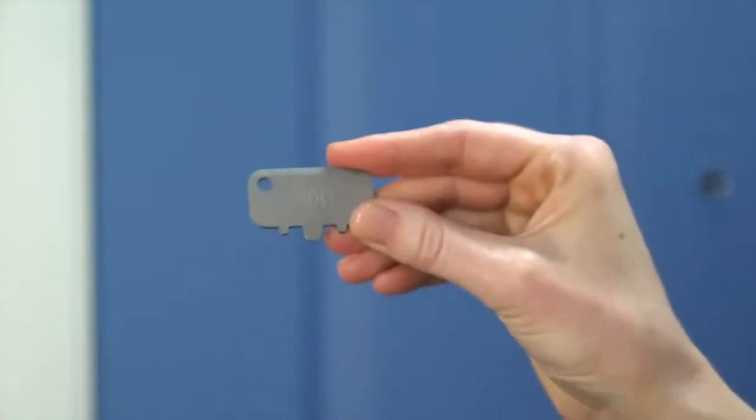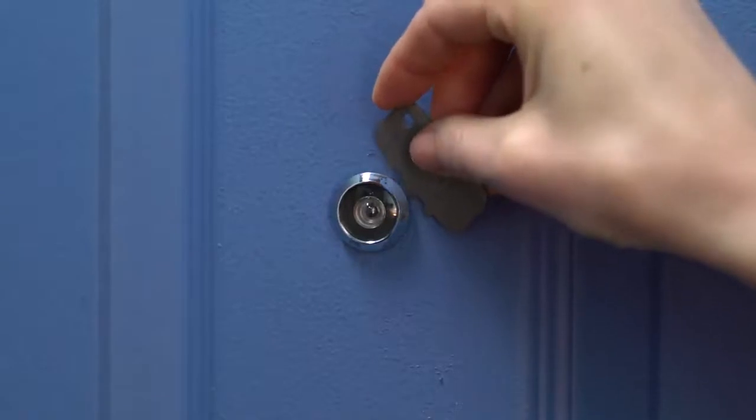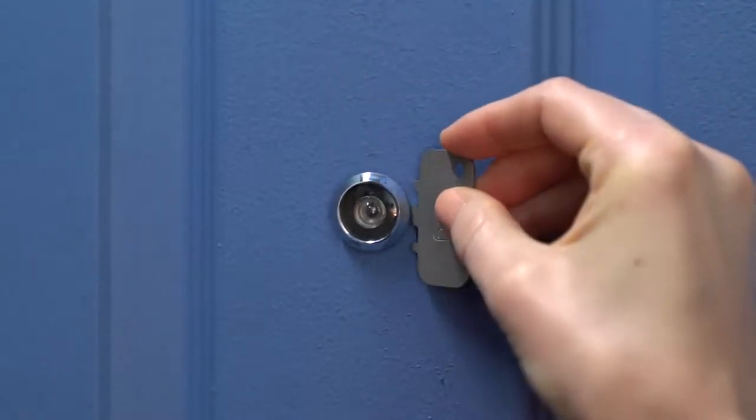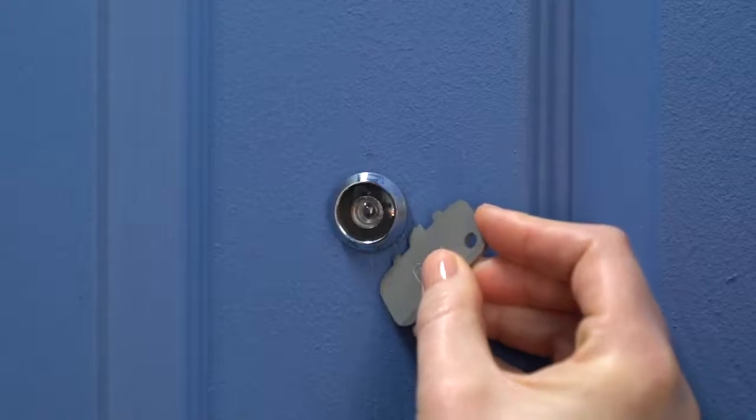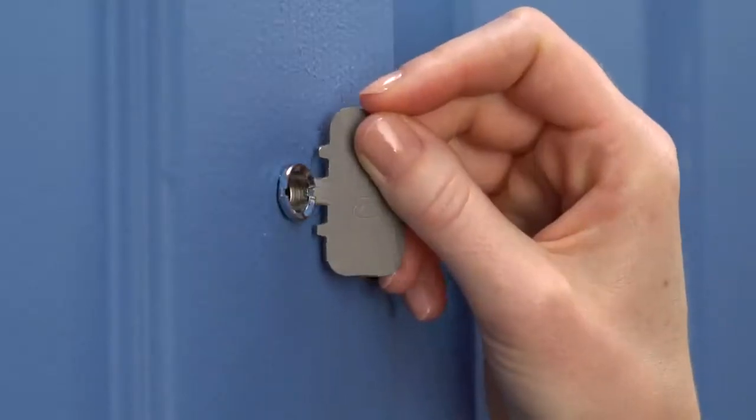Now, let's grab the included peephole key and check if there's paint covering either side of your peephole which could make it hard to unscrew. If so, use the toothed edge of the peephole key to remove any paint covering the edges of your lens or the rear of the viewer.